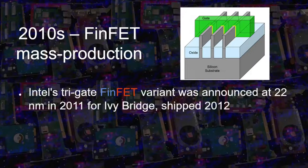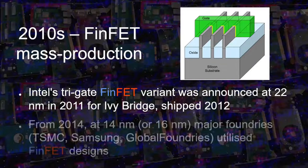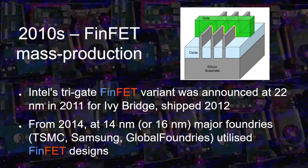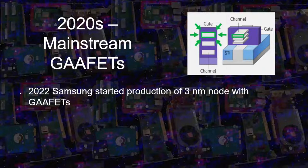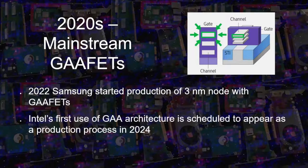And in 2011, the first FinFETs arrived in Intel processors. By 2014, they were already being produced in all major foundries like TSMC, Samsung, and GlobalFoundries. Now, in 2022, we enter the era of GAA FETs — the gate all-around field effect transistors — but with more complex geometry. In a few years, they will become mainstream too.